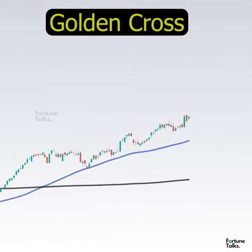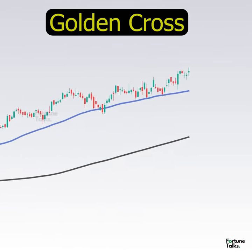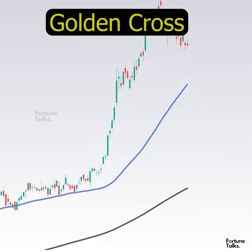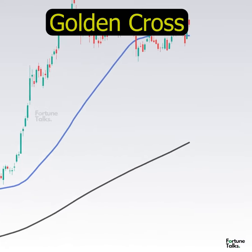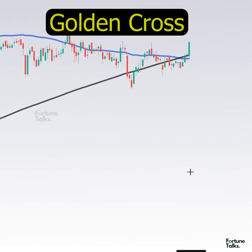You can ride massive trends with the golden cross and exit your trade only when the 50-SMA crosses below the 200-period moving average.